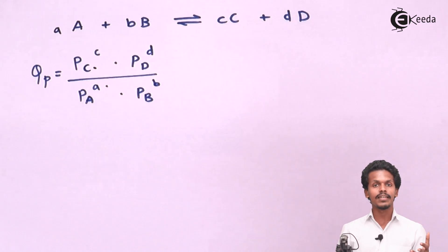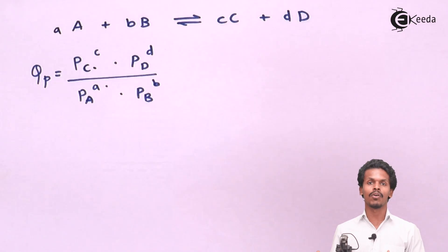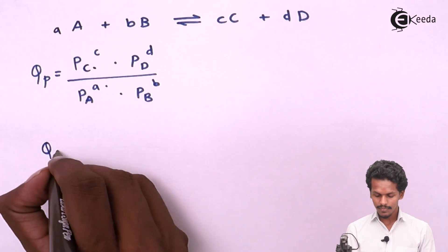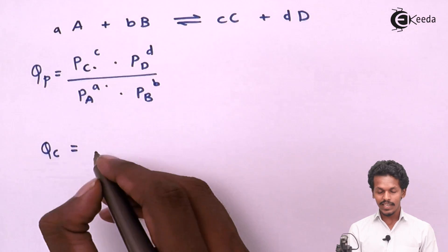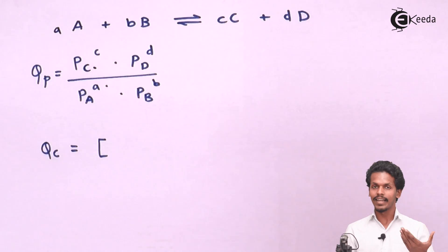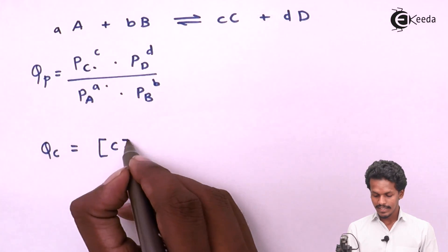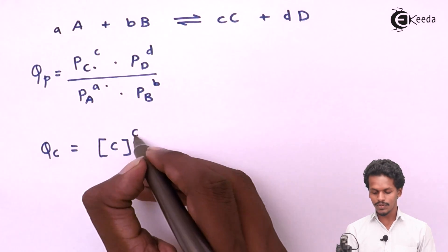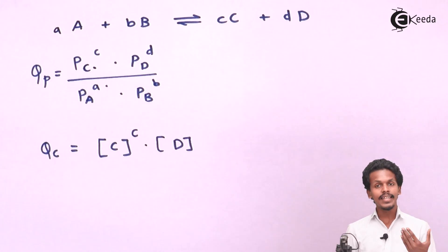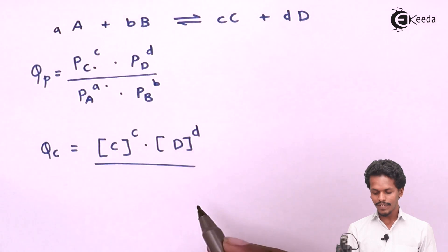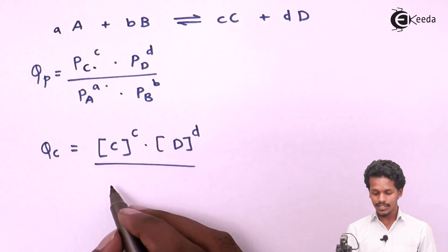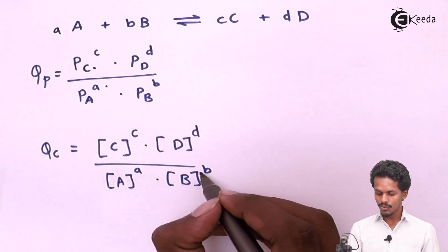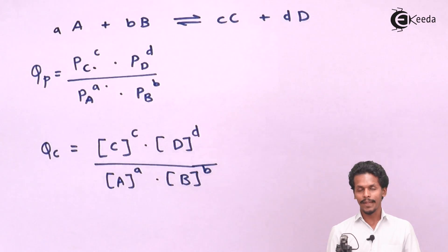If the reaction takes place in aqueous solution, the reaction quotient is represented as Qc and is expressed using molar concentrations as: Qc = ([C]^c × [D]^d) / ([A]^a × [B]^b), where square brackets denote molar concentrations, each raised to their stoichiometric coefficients.